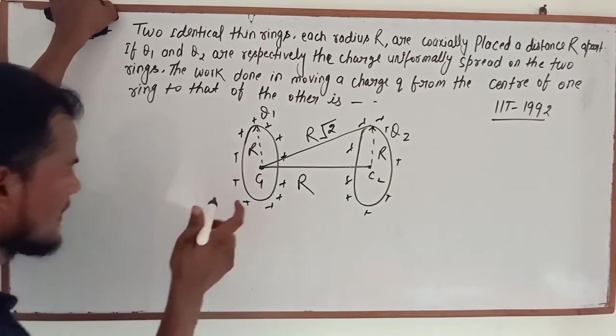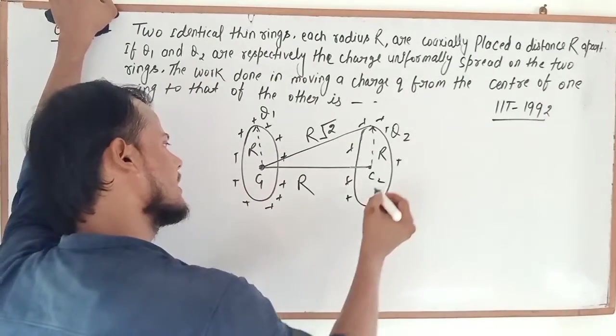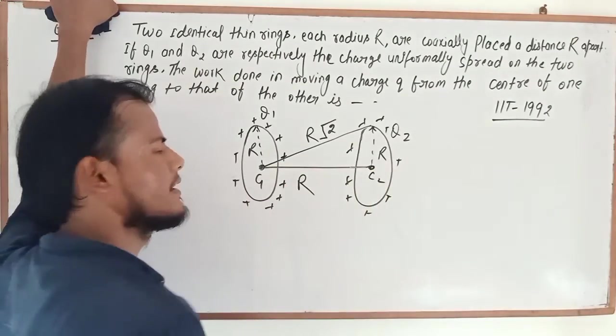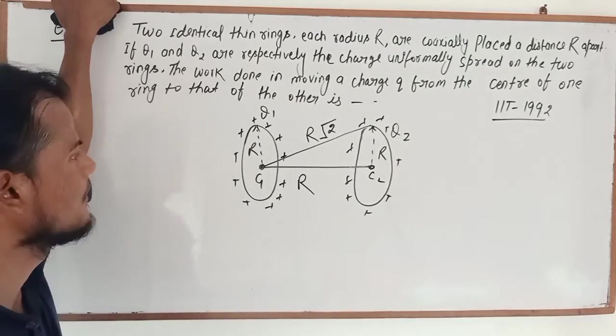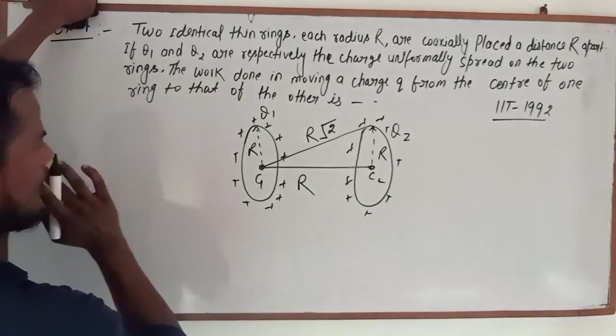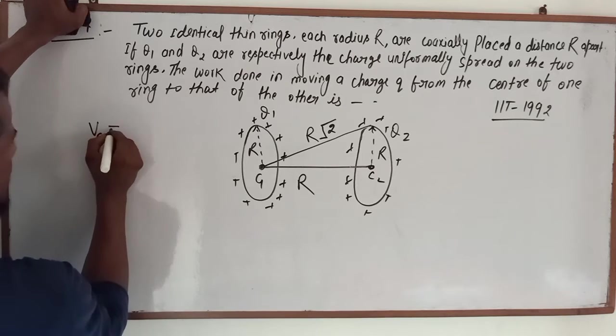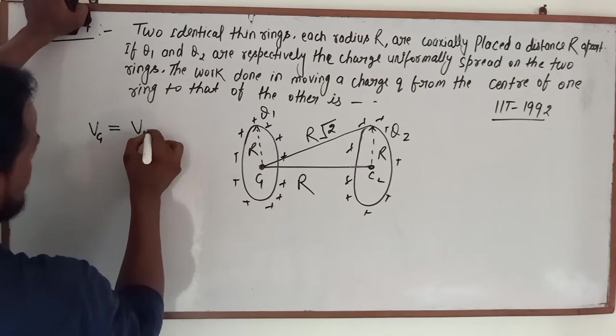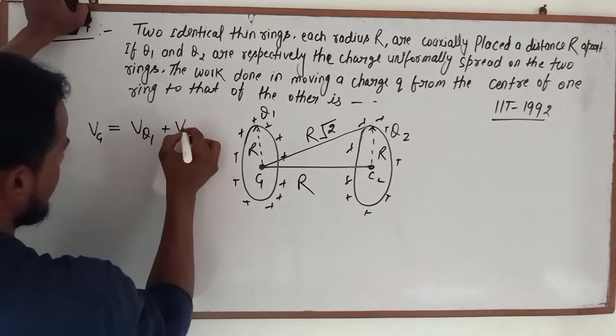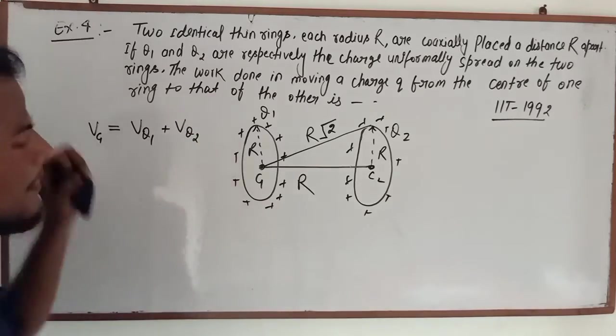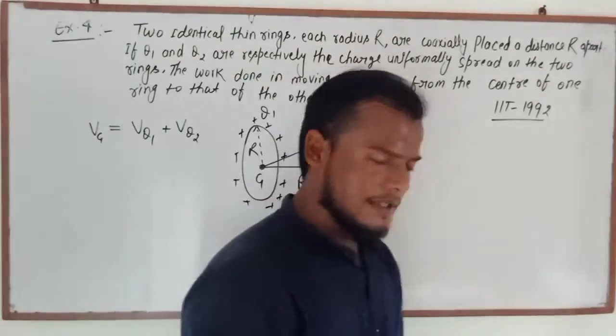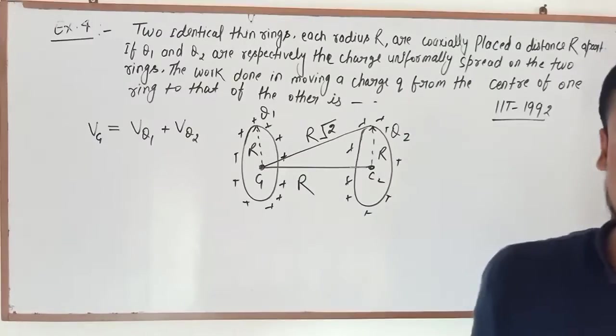If we calculate the potentials at C1 and C2, the potentials are due to Q1 and Q2. So if we can see, the potentials are from Q1 and Q2. The concept is already clear, potentials at each point.